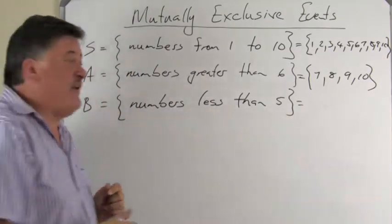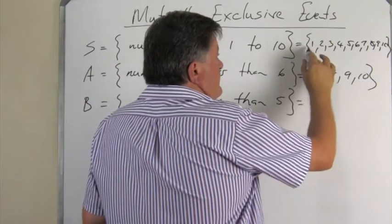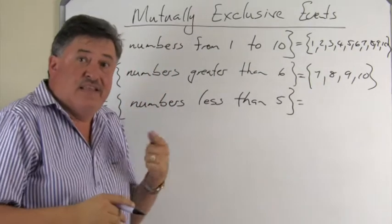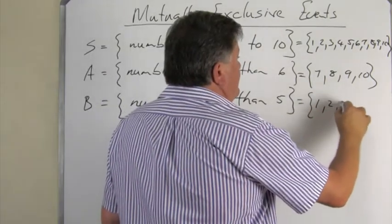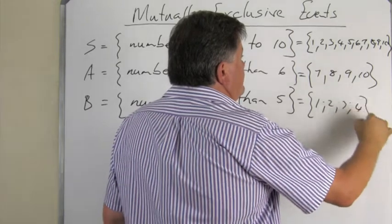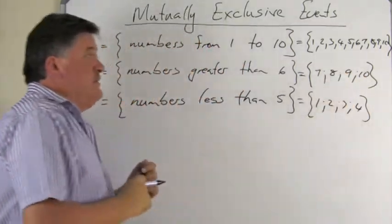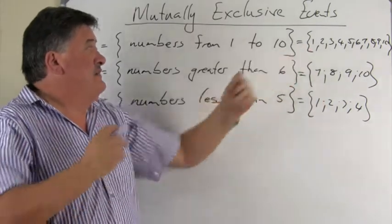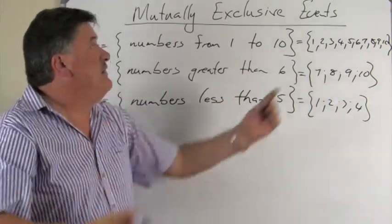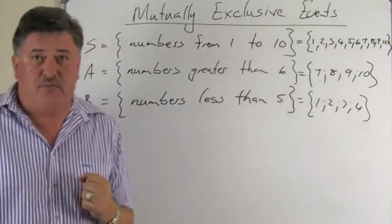The numbers less than 5, and of course they must be within the sample space, and that will be 1, 2, 3, and 4. So event A, event B, and my sample space of numbers 1 to 10.